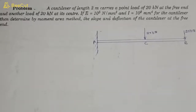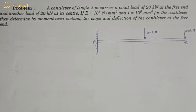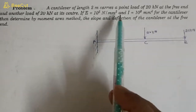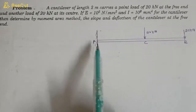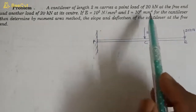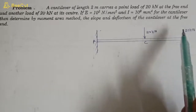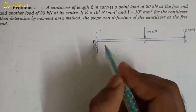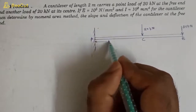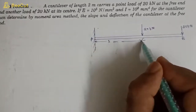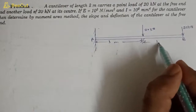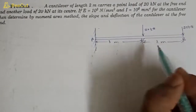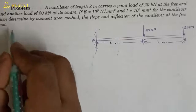Hello friends, welcome to my YouTube channel Mac PM. In this video we will continue our topic: deflection of beams. We have a cantilever of length two meters, with a point load of 20 kilo Newton at the free end, and another load of 20 kilo Newton at its center, which is one meter from each end, totaling two meters.